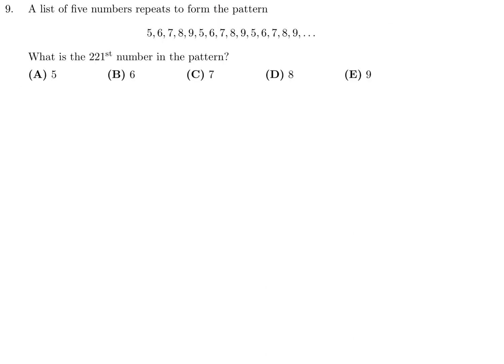A list of 5 numbers repeats to form the pattern 5, 6, 7, 8, 9, 5, 6, 7, 8, 9, 5, 6, 7, 8, 9, dot, dot, dot. What is the 221st number in this pattern?